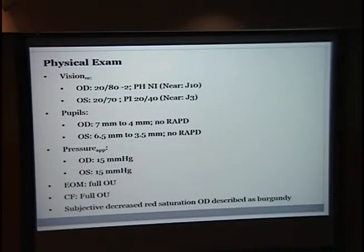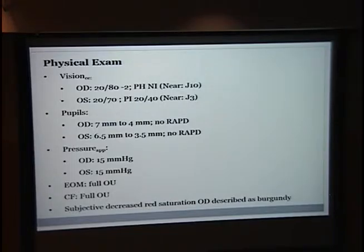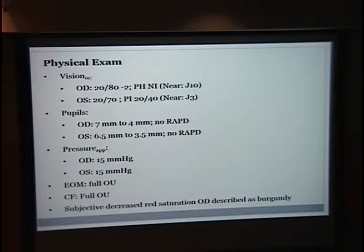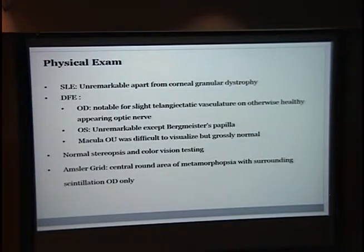Physical exam was for the most part pretty unremarkable. He had 20/80 in his right eye with no improvement on pinhole and near was J-10, whereas the left eye did have improvement on pinhole and near was J-3. He had no APD. Right eye was bright-dark from 7 to 4 and left 6.5 to 3.5. Pressure was normal, as well as extraocular movements and confrontational fields. He had subjective decrease in red saturation, describing it as a forgetting color when looking at the cap. SILAM was unremarkable except for the obvious corneal granular dystrophy. Dilated fundal exam showed slight telangiotactic vasculature but otherwise healthy on the right side, and left was unremarkable except for a Bergmeister papilla. Macula in both eyes was difficult to visualize but appeared grossly normal. Stereopsis and color vision testing were normal as well.